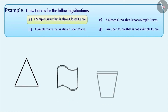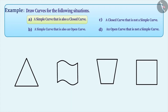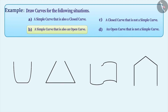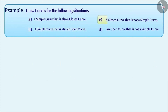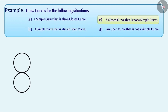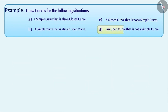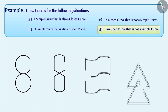Some more examples are as follows. A simple curve which is also an open curve can be made this way, with more examples shown. Similarly, a closed curve which is not a simple curve can be made this way, with further examples. An open curve which is not a simple curve can be made this way, with some more examples shown.